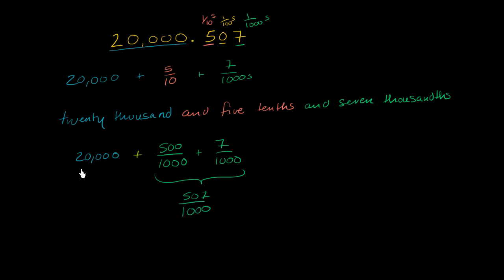So we could just call this 20,000 and 5 hundred and seven thousandths. So let's write that down. So we could just say this is 20,000 and 5 hundred and seven thousandths.